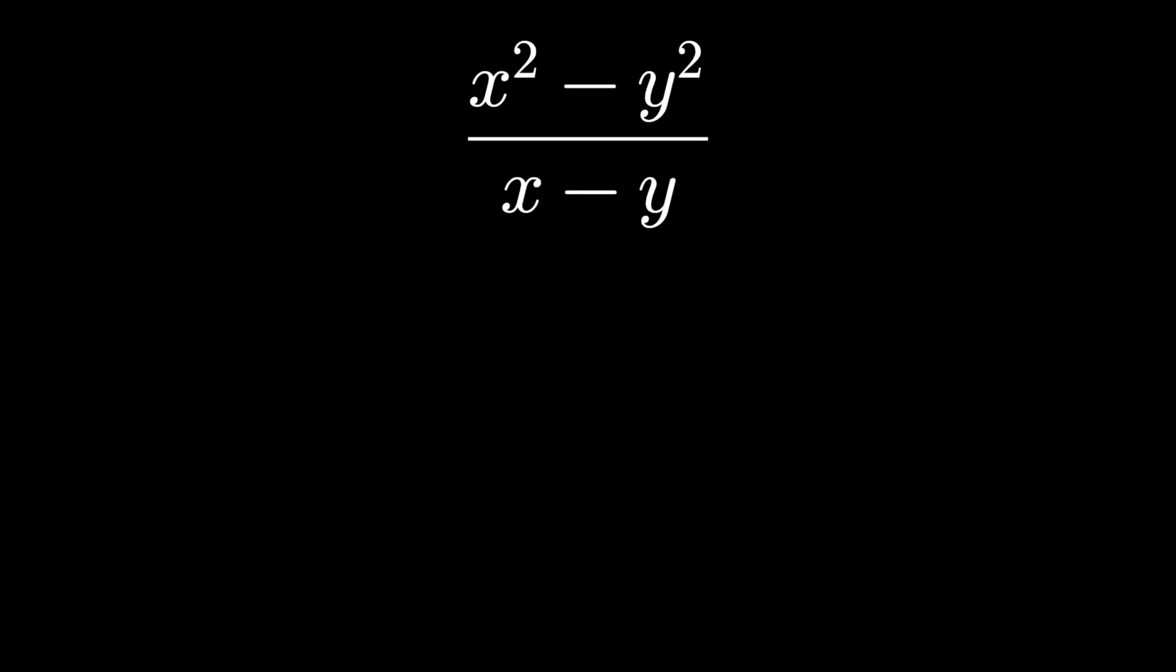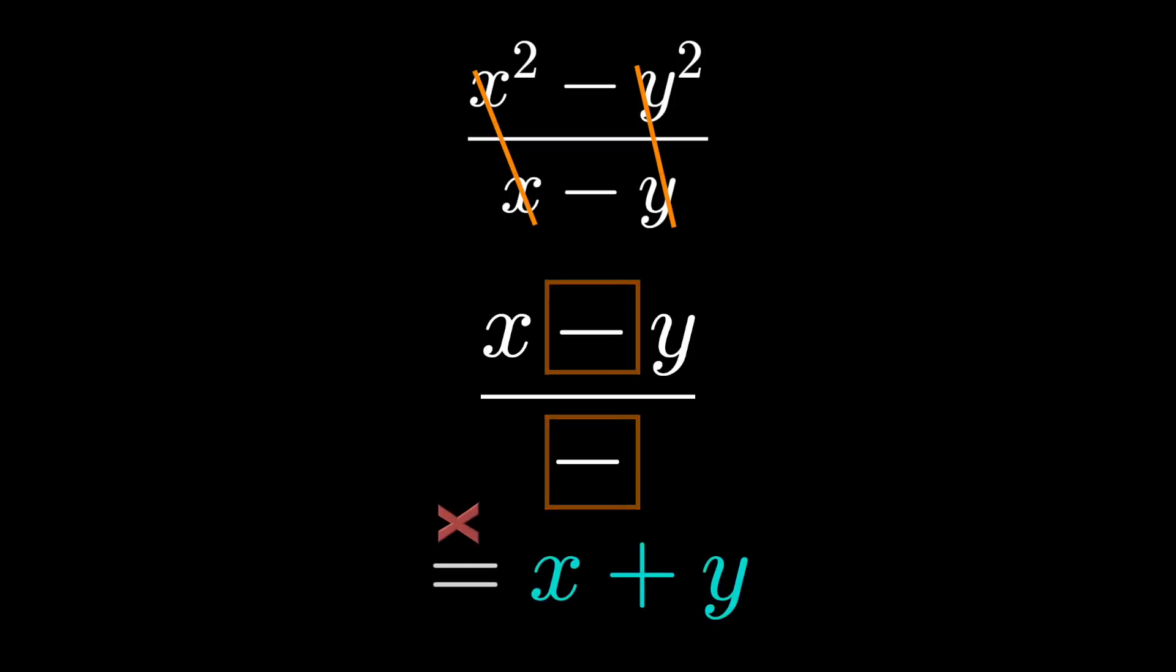How about this expression? Now, a difference of squares would simplify this correctly, but a fun error is just canceling one set of x's on the top and the bottom, one set of y's on the top and the bottom, to get x minus y over a negative symbol. I mean, you didn't cancel that after all. And then, of course, two negatives make a positive. And the answer is x plus y, which is correct.